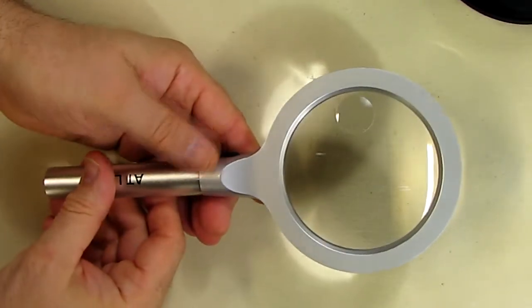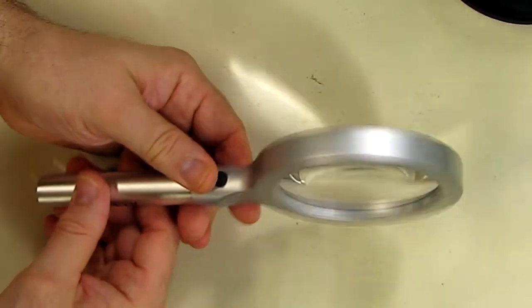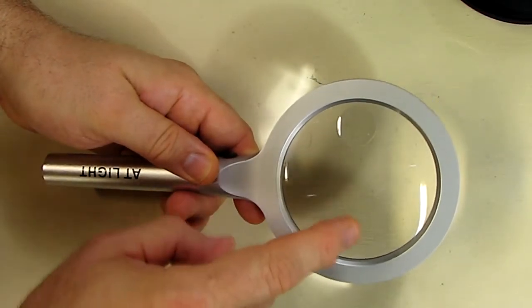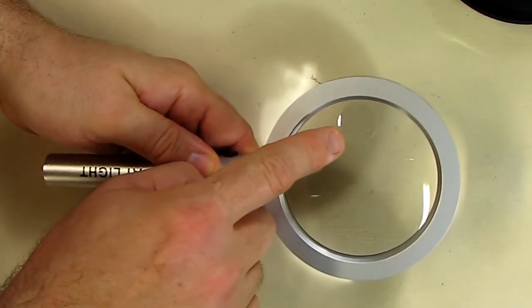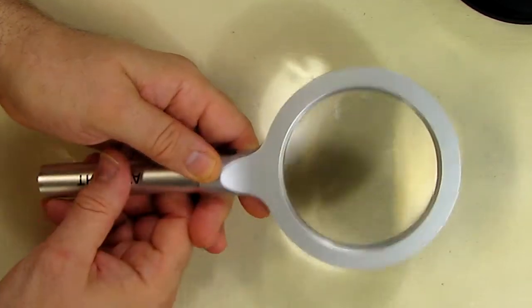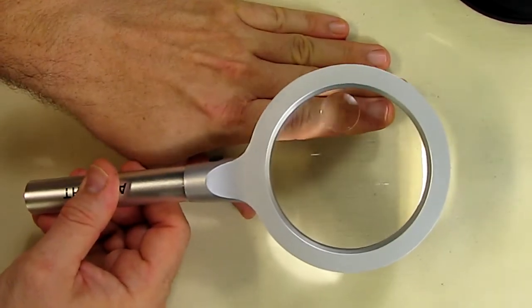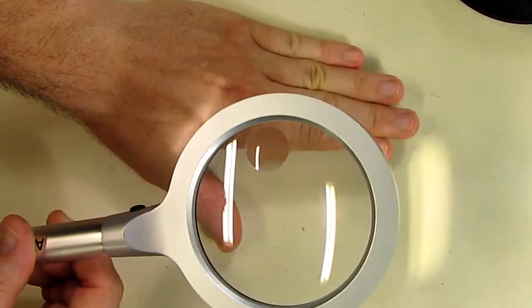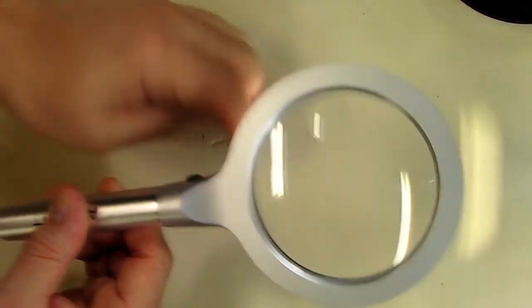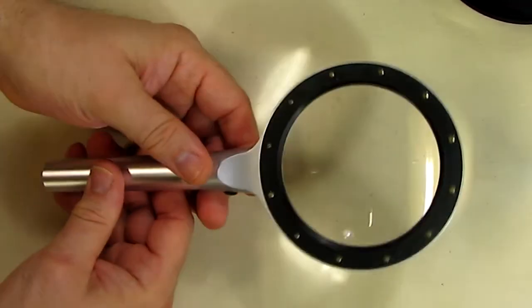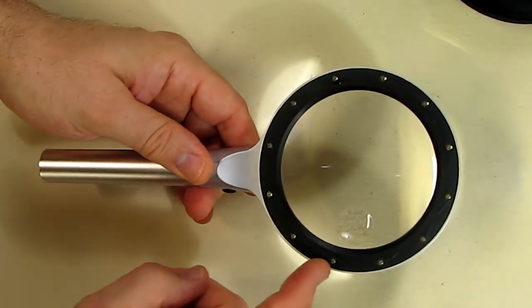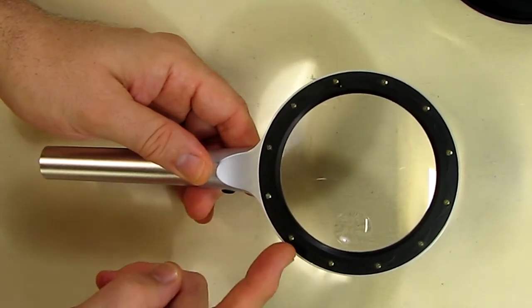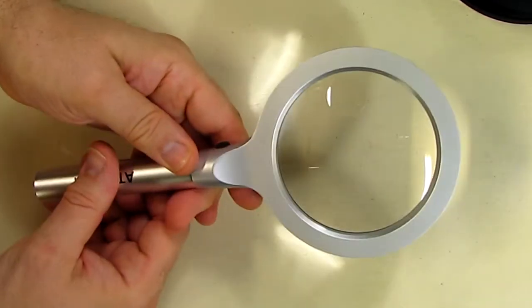This is the unit itself. On one side you've got the lens that you look through. You have a 5x optical lens which is the more powerful lens, and then the main lens which is 2.5x. On the flip side you have 12 LEDs in a ring to illuminate whatever you're looking at.